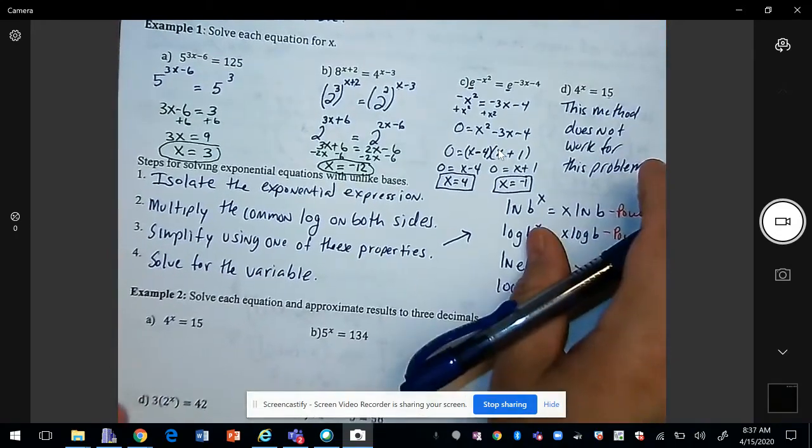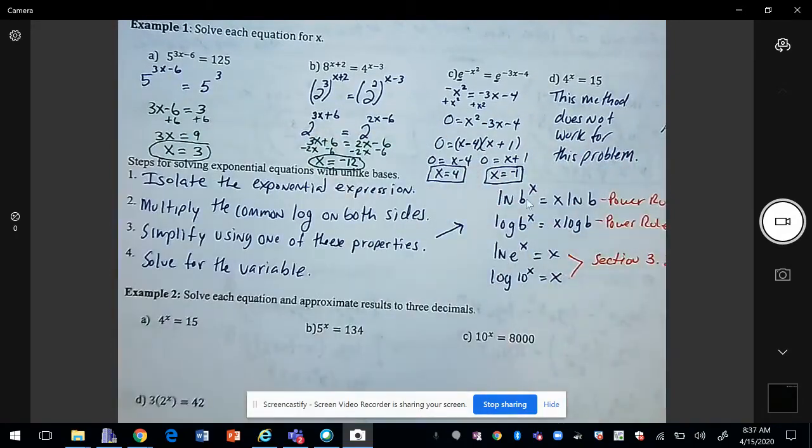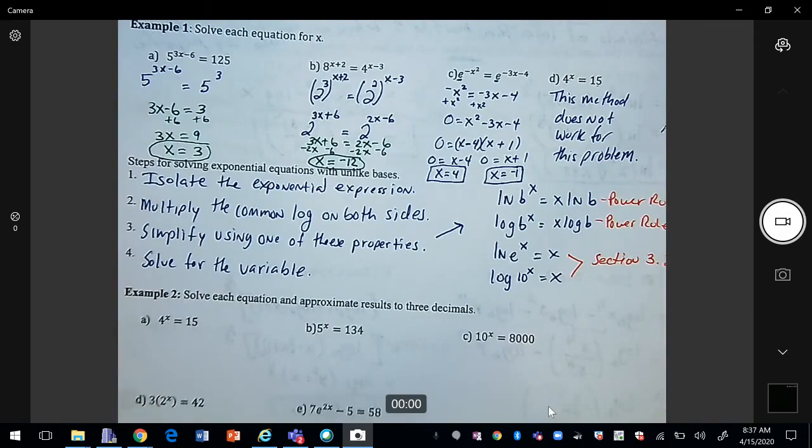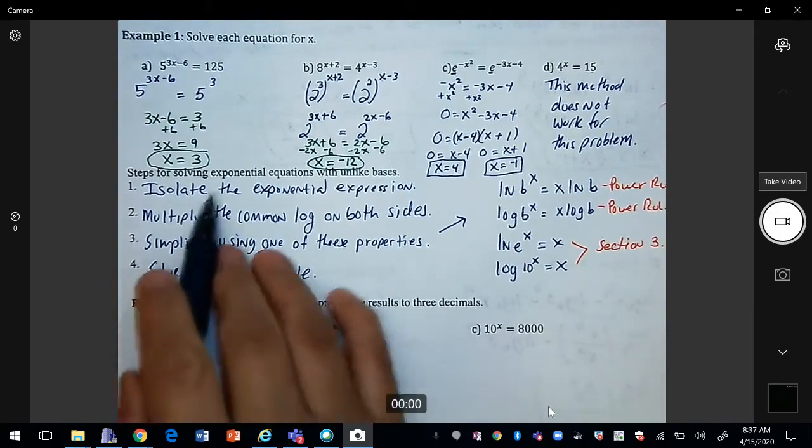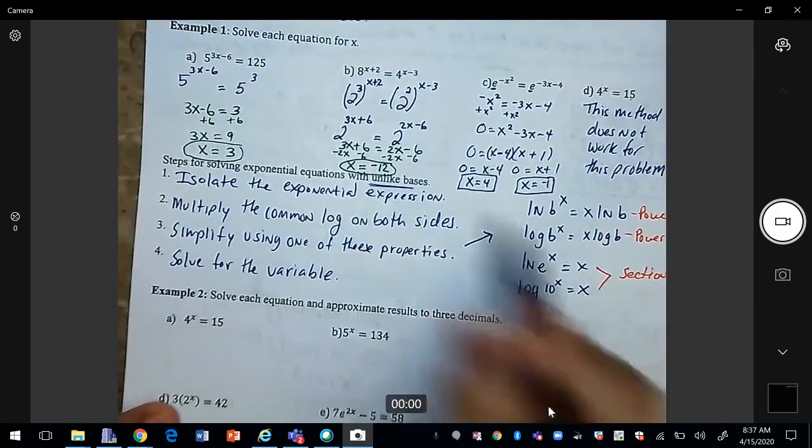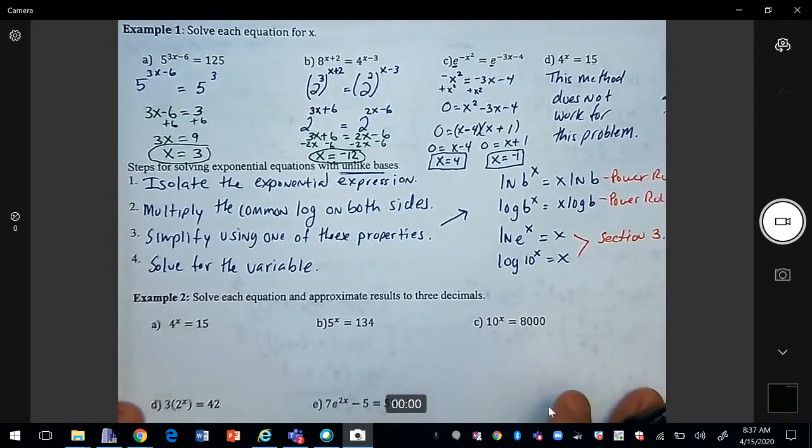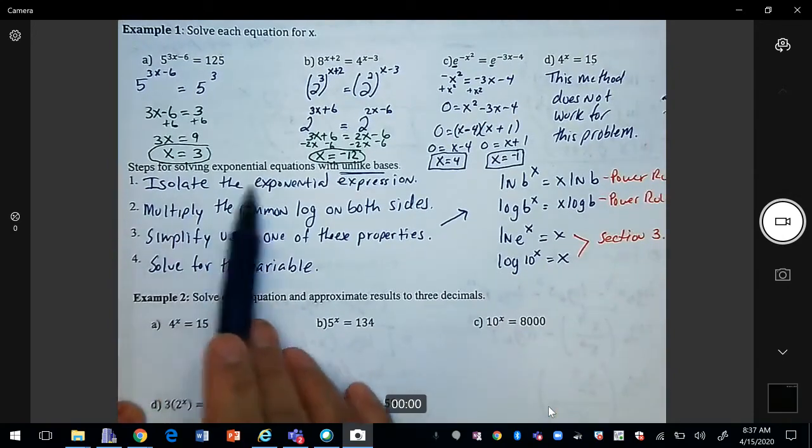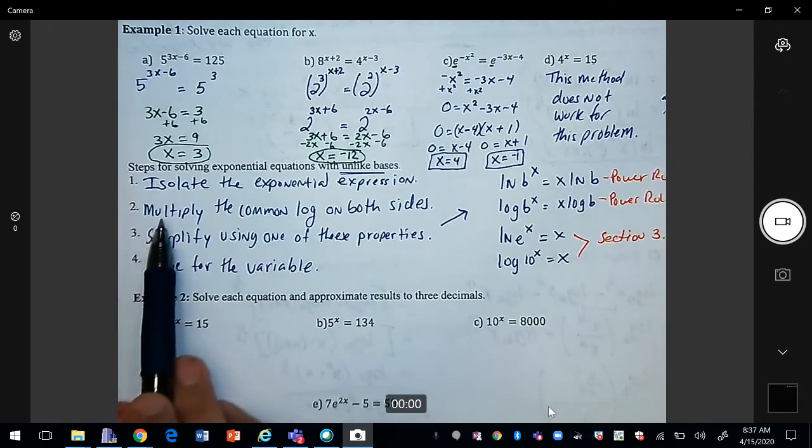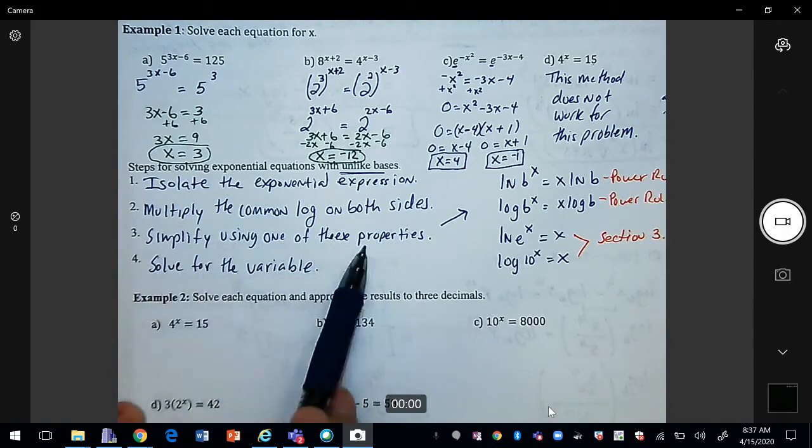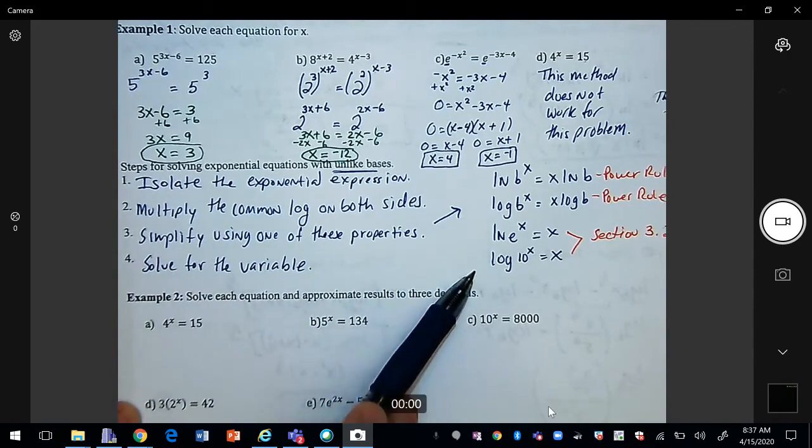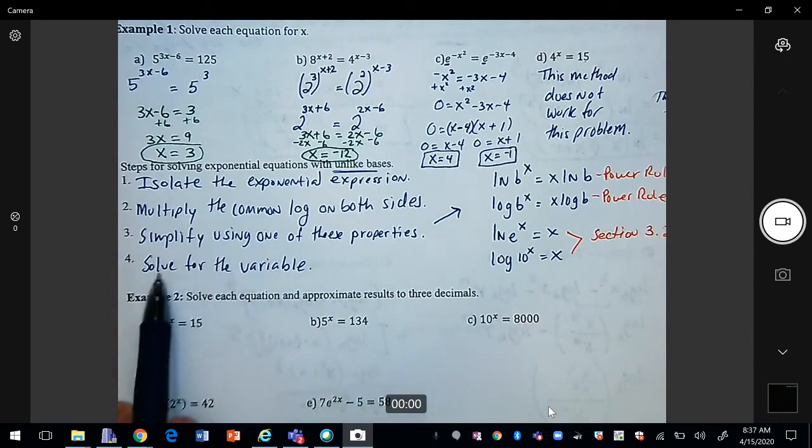So we need a different method. Here we have isolate the exponential steps for solving exponential equations. Notice it says with unlike basis. So the first thing we're going to do is isolate the exponential expression, multiply the common log on both sides, simplify using one of the properties that I have listed over here, and solve for the variable.